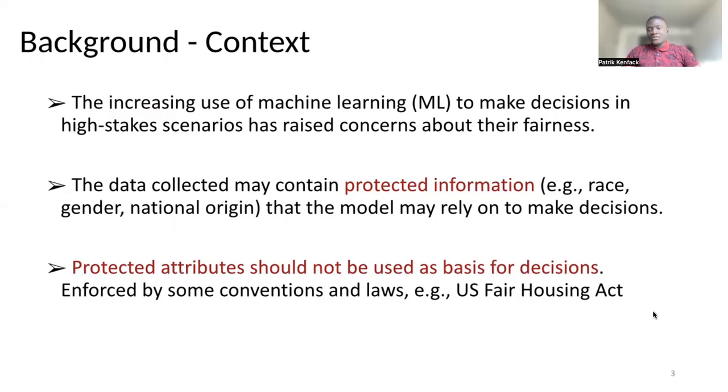The data we collect to make decisions may contain protected attributes or protected information, such as race, gender, nationality, and so on. And models that we build can rely on those sensitive information to make decisions. However, protected attributes should not be used as a basis for decision making. And this is enforced either by conventions or law, such as the US Housing Act.